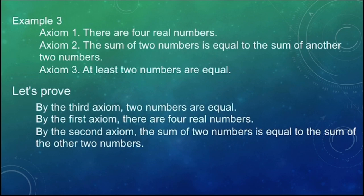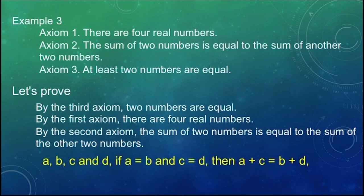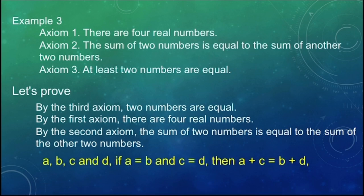For our explanation, let's prove. By axiom 3, 2 numbers are equal. By the first axiom, there are 4 real numbers. By the second axiom, the sum of 2 numbers is equal to the sum of the other 2 numbers. Therefore, for all real numbers A, B, C, and D, if A is equal to B and C is equal to D, then A plus C is equal to B plus D. This proves the addition property of equality.